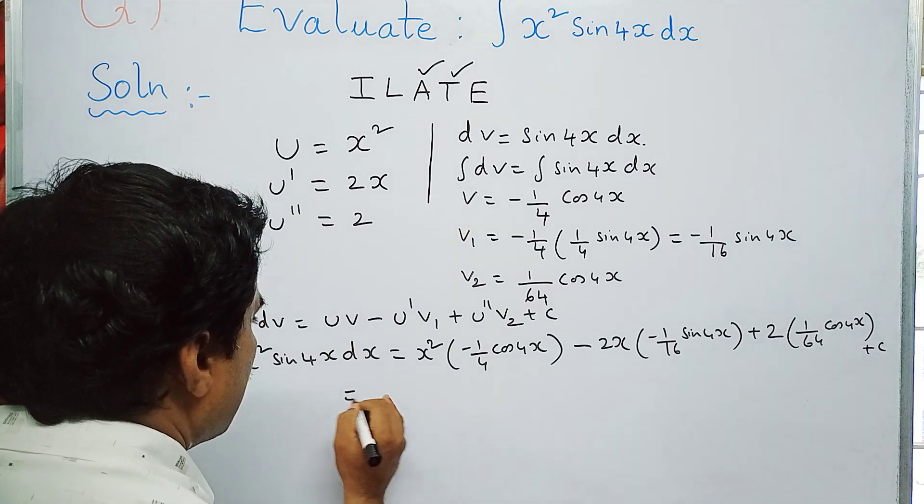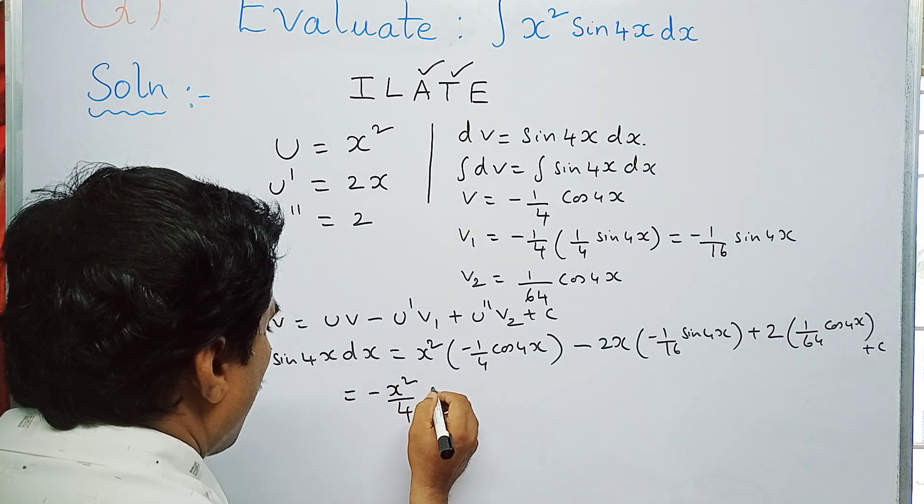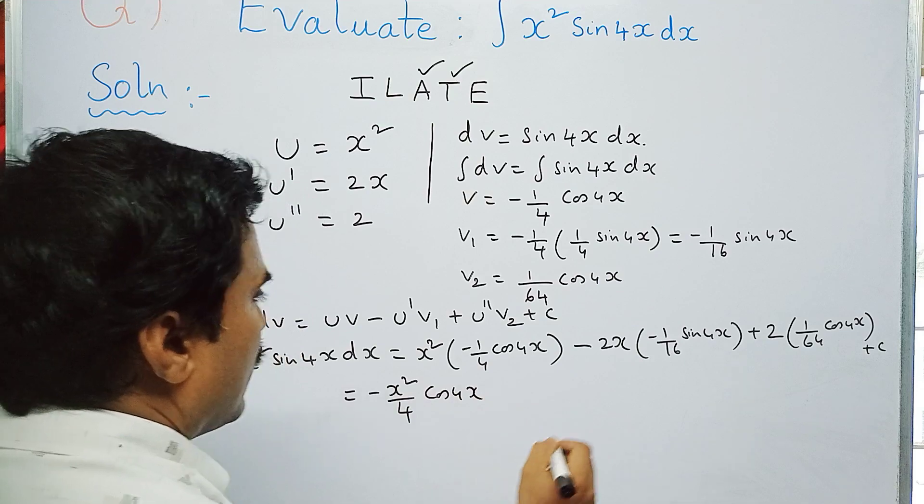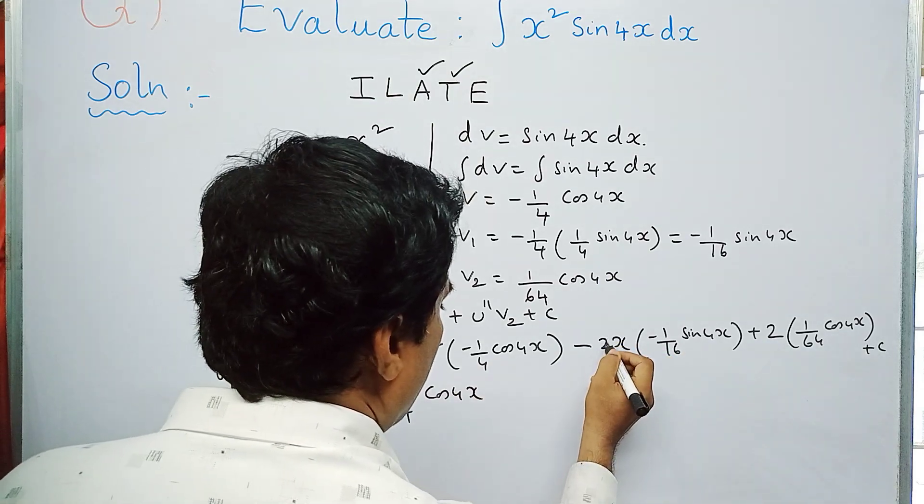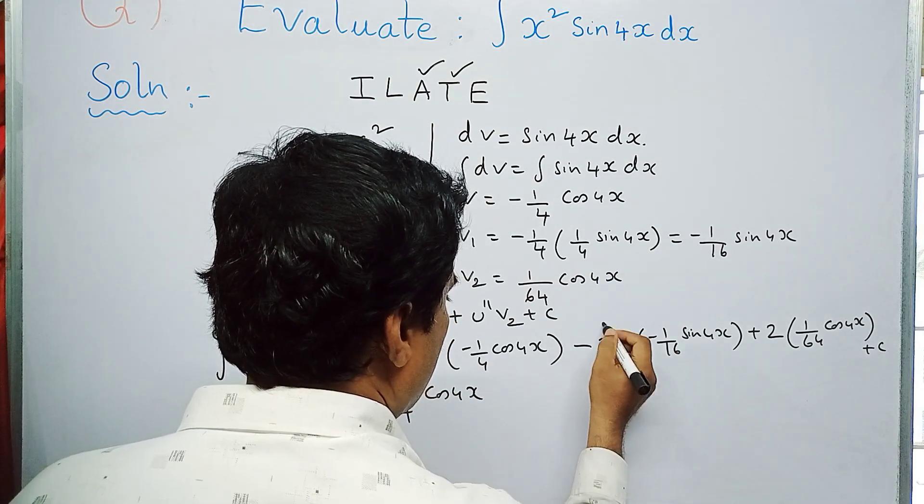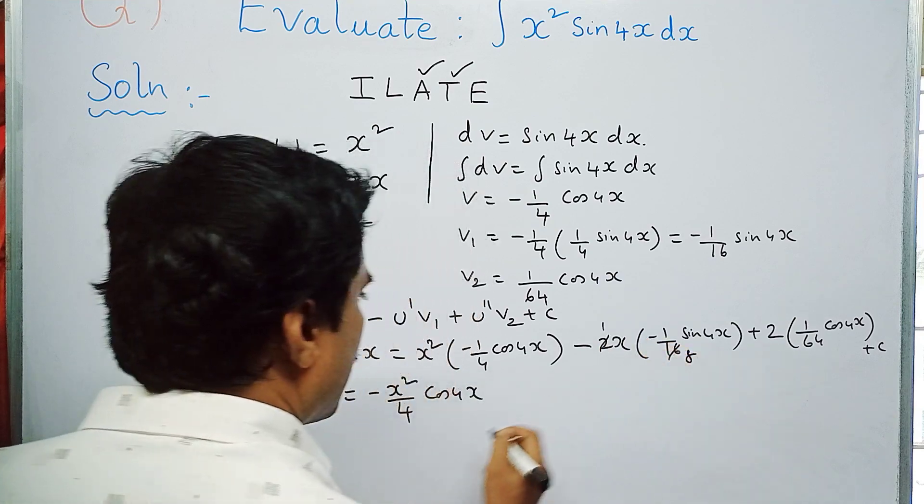So simplify further. This will be minus x square by 4 cos 4x. And here minus minus is plus, and you can cancel this 2 and 16 by using 2 tables—2 becomes 1 and 16 becomes 8. So minus minus plus.